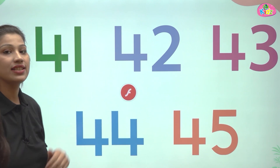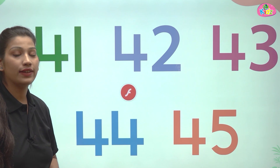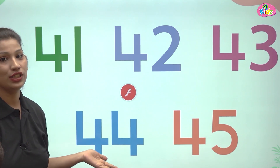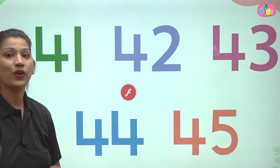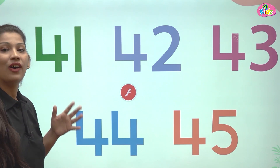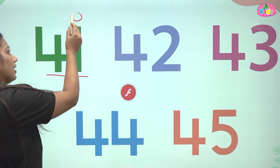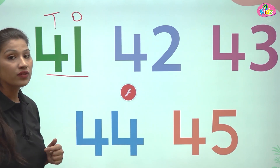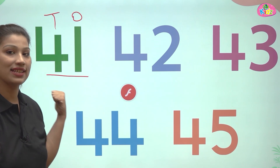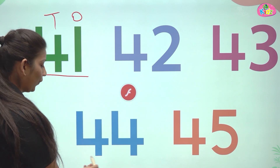41 is 41, 42 is 42, 43 is 43, 44 is 44 and 45 is 45. These are the five numbers of today's session. All of them are two-digit numbers with a 1's position and a 10's position. All of these numbers have 4 at the 10's position.